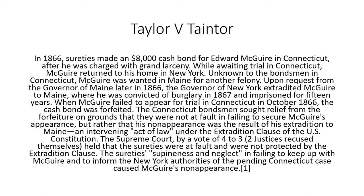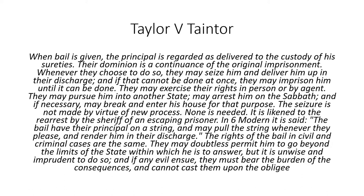The Supreme Court, by a vote of 4 to 3 — two justices recused themselves — held that the sureties were at fault and were not protected by the extradition clause. The court found that the sureties' supineness and neglect, and their failure to keep up with McGuire and to inform New York authorities of the pending Connecticut case, caused McGuire's non-appearance.